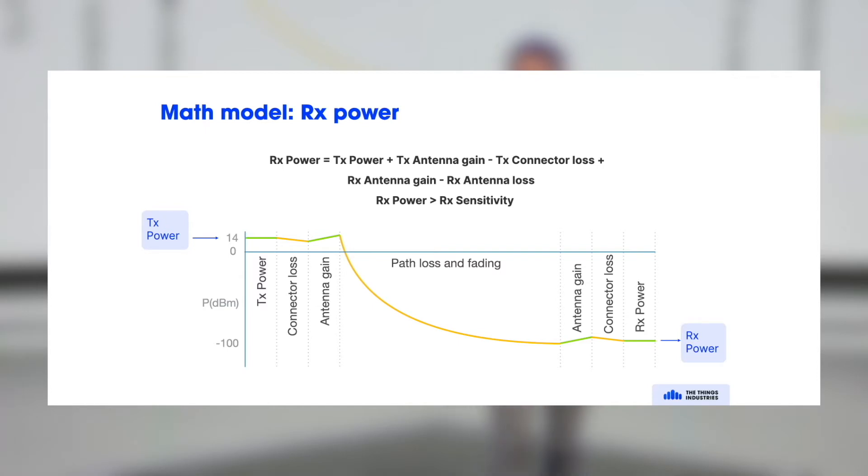Now the RX power is the transmission power, so that's what the transmitter used to transmit the message, plus the antenna gain for transmitting the message. There is some connector loss, so that's negative on the transmitter side.